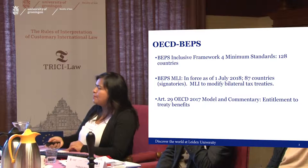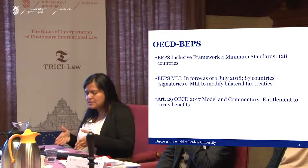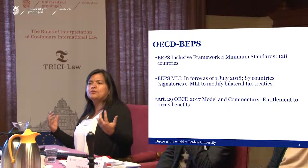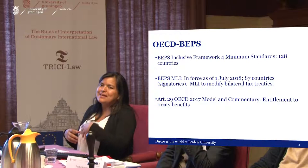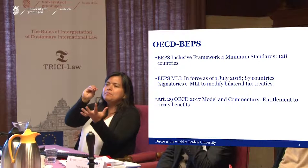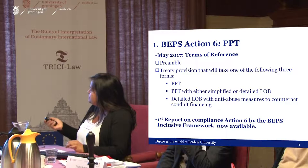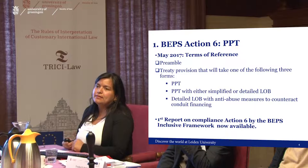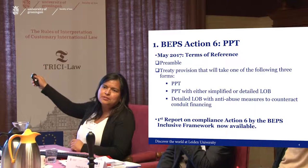When the principal purpose test started with the BEPS project and its 15 actions, specifically BEPS Action 6, there were two elements they wanted: first, a general anti-avoidance rule, and second, a preamble. This preamble is important, because when you interpret the general anti-avoidance rule, you test it against the object and purpose of the convention — which includes the preamble. The principal purpose test takes one of three forms: a PPT alone, a PPT with simplified or detailed limitation on benefits (LOB), or a detailed LOB with anti-abuse measures. Most countries are introducing the principal purpose test.